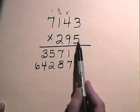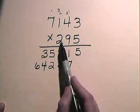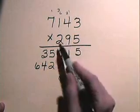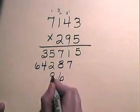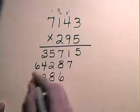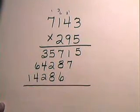We move over to the hundreds place and multiply by 2, placing the result here in the hundreds place. 2 times 3 is 6. 2 times 4 is 8. 2 times 1 is 2. 2 times 7 is 14. And now we add our numbers.